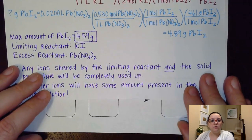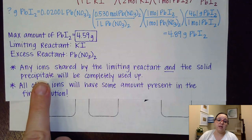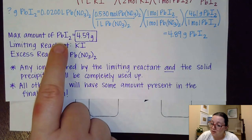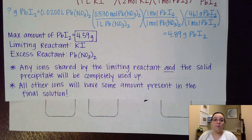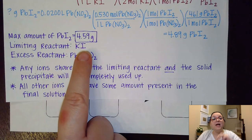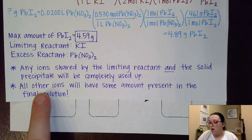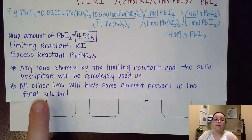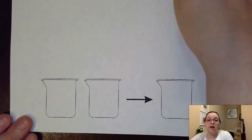Now that I know the limiting reactant, I know that any ions shared by both the limiting reactant and the solid precipitate will be completely used up. Looking at PbI₂ and KI, we see iodide ion in common. So all of the iodide ions are going to be used up — they were in the limiting reactant and every one of those ions goes toward being part of that solid precipitate. However, all other ions — potassium, nitrate, and even lead — will have at least some amount present in the final solution.